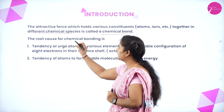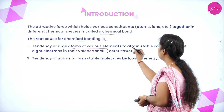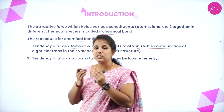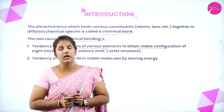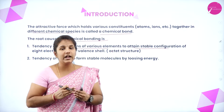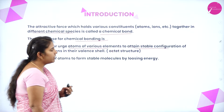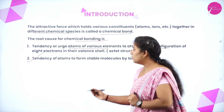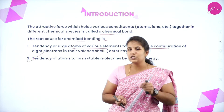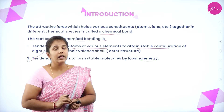There are root causes for chemical bonding. The first is the tendency or urge of an atom to attain a stable electronic configuration — every atom likely to possess 8 electrons in its outermost shell, and that was the first reason to form a chemical bond. The next reason is the tendency of an atom to form a stable molecule, especially attained by the losing of energy, causing a stable electronic configuration.